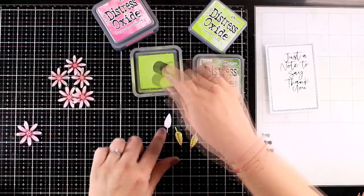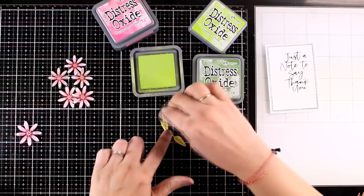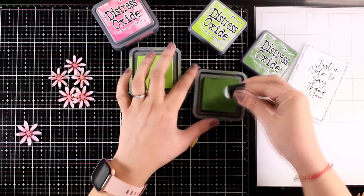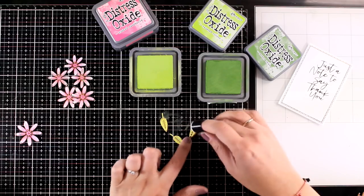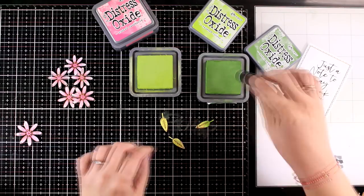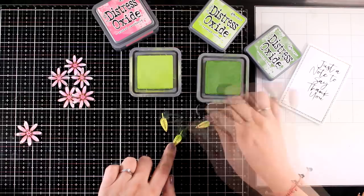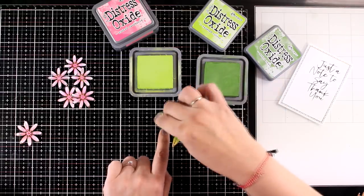I will approach the same process of inking with Distress Oxides on the leaves. I have three leaves I have foiled and cut out there and I'm starting with Twisted Citron for the lightest color and then I will add some shadow at the base of the leaves using Moulone.